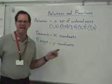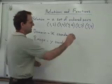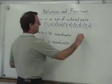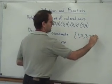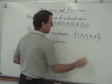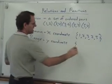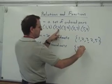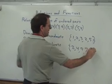If I were to ask you what is the domain of this set of ordered pairs, the set of x-coordinates would be 1, 2, 3, 2, and 5. So that would be the set of the domain. And then the set of points making up the range would be the y-coordinates, so it would be 2, 4, 9, 7, and 4.